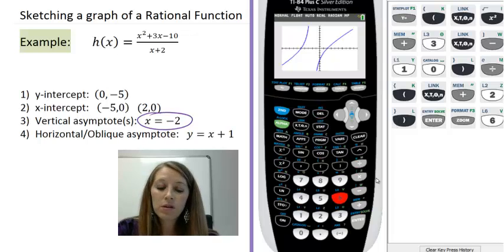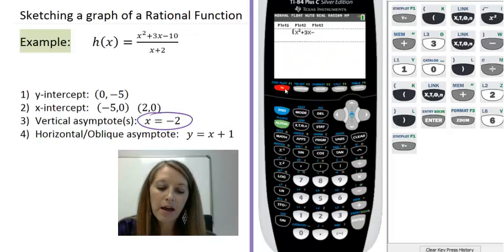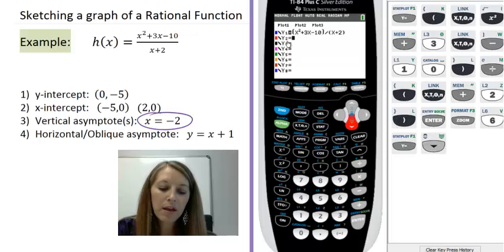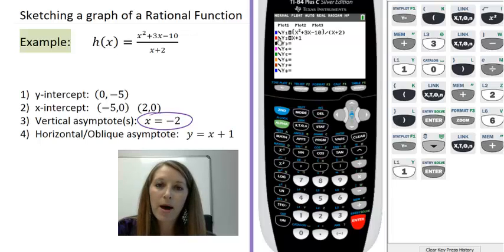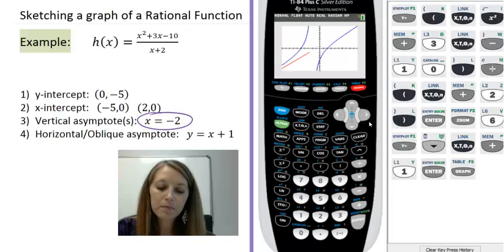Now something even neater with the graphing calculator is if you ever have an oblique asymptote and you want to double check that, you can actually plot that in at the same time. So I plot my actual equation in y1, and let me plug in my asymptote in y2, so x plus 1. And the neat thing about this one is it's going to graph it in a different color. It's going to graph my oblique asymptote in red. So let's see if we can see this here. So we can see that my graph in blue actually follows my oblique asymptote in red.